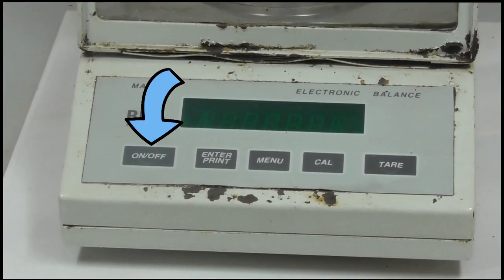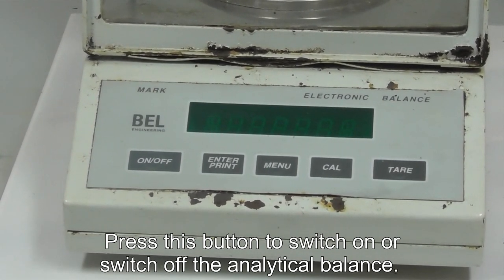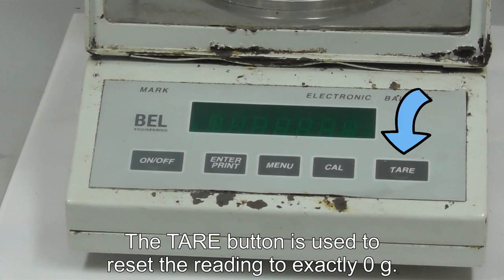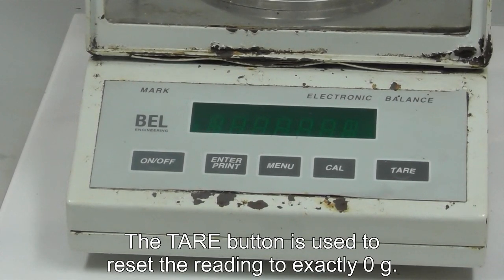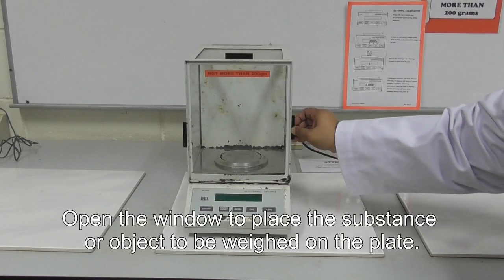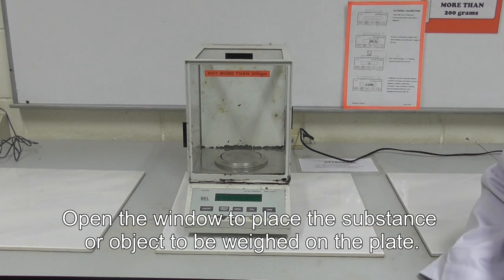Press this button to switch on or switch off the analytical balance. The tear button is used to reset the reading to exactly zero grams. Open the window to place the substance or object to be weighed on the plate.